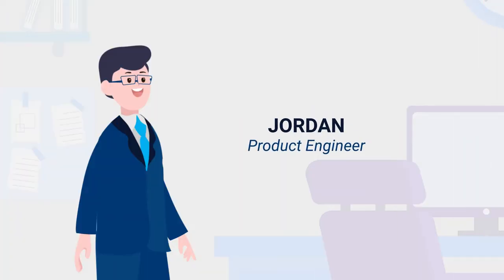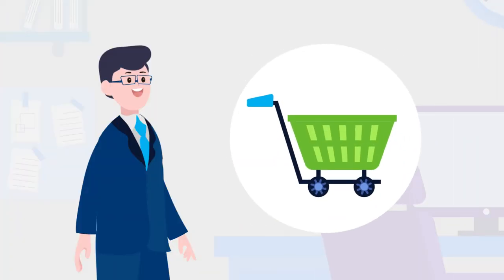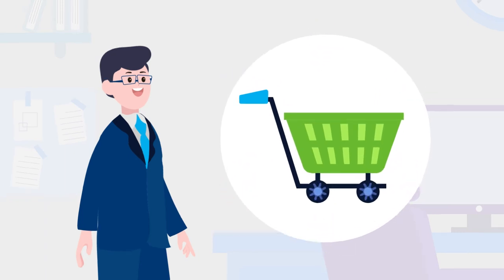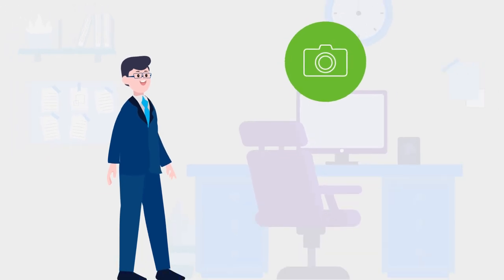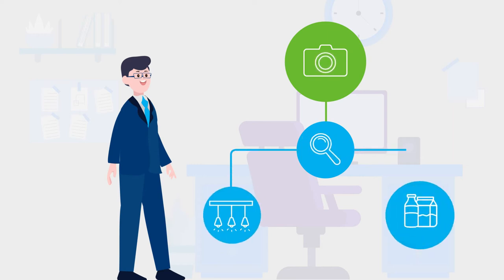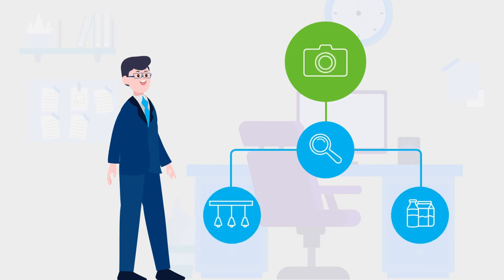Now, meet Jordan. He is a product engineer in a company that builds vision-based smart trolleys and smart checkout systems for retail stores. One of his responsibilities is to pick the right camera that has the capability to identify all types of objects in a shopping trolley or at the checkout counter, even with varying lighting conditions and different types of products.